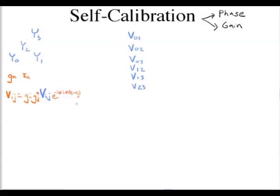You can also solve for electrical delays in your telescope in a very similar way — solving for the four different electrical delays. We'll talk about phase calibration first because it's the most fundamental parameter that needs to be solved for.